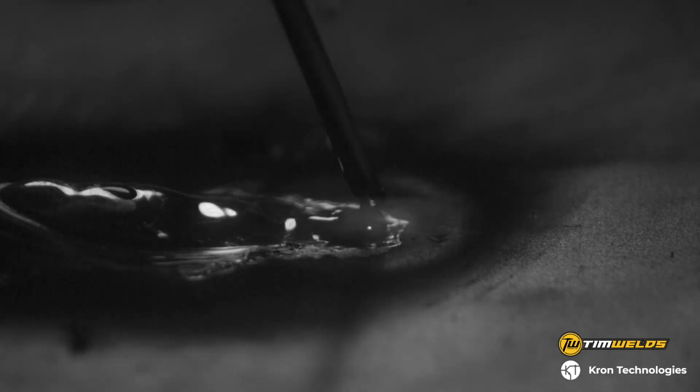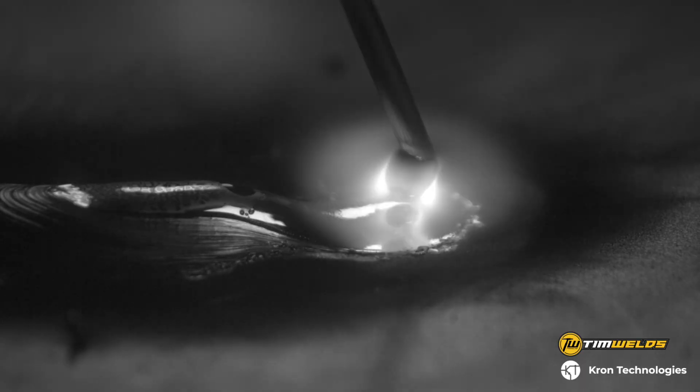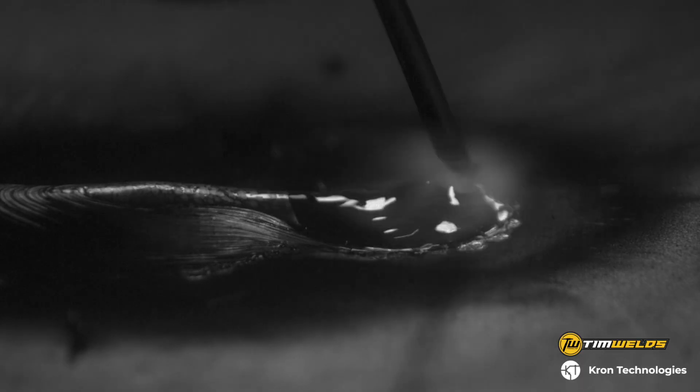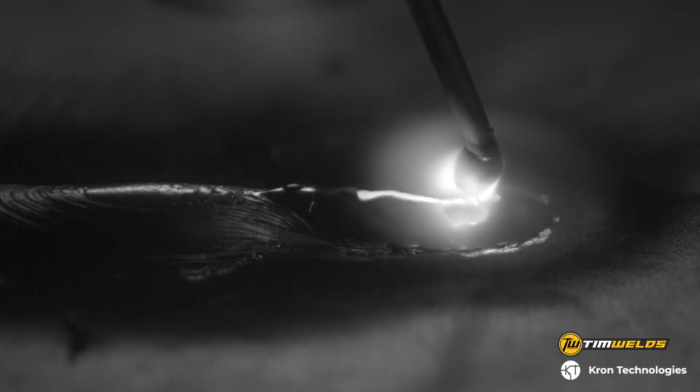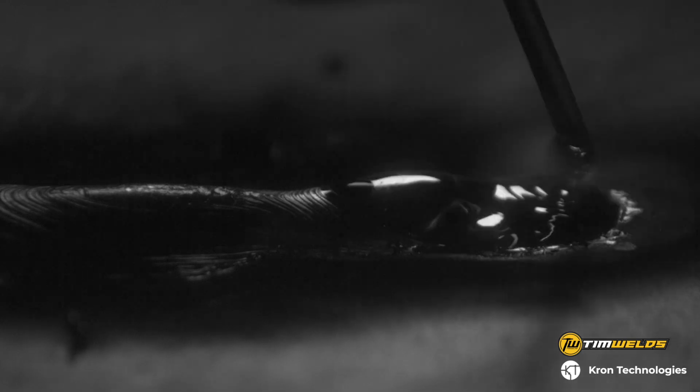Now this particular type of gas metal arc welding is called short circuit transfer and that's because the wire goes down and it will actually short out and create a short circuit between the welding wire and the workpiece. That's why the arc goes out over and over again and each time that it does one of those droplets transfers on.